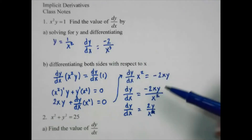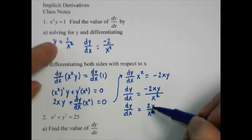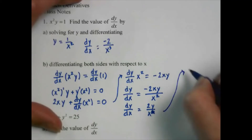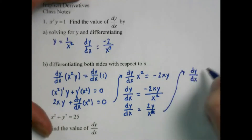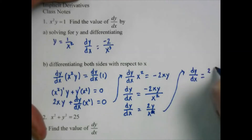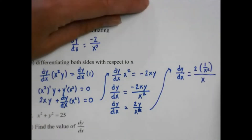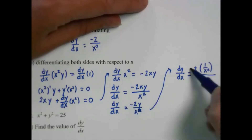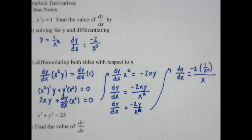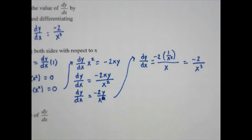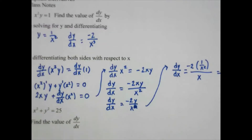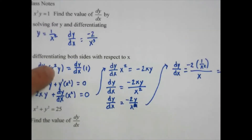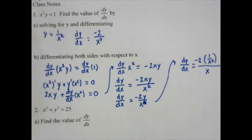Well, that doesn't look the same as the explicit result. So to finish this one, I'm going to replace y with what it's equal to. And then that's simplified — dividing gives us negative 2 over x cubed. So in this case, it probably would make more sense just to solve it explicitly. But there are times when we can't solve for y first, so we have to do this implicit derivative.